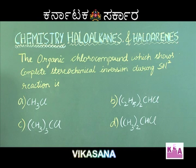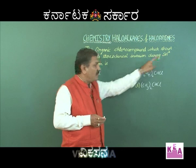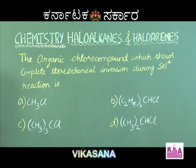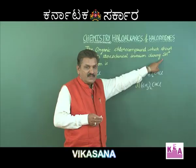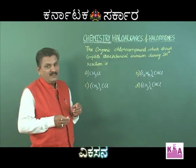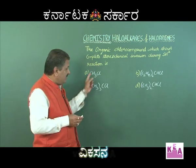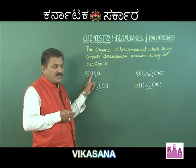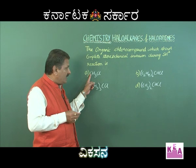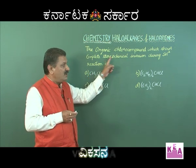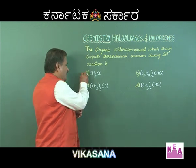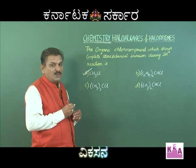This is an SN2 reaction, which involves inversion of stereochemistry. Stereochemical inversion is associated with SN2 reactions. SN2 reactions are undergone by primary alkyl halides. Amongst the given four options, the primary alkyl halide is methyl chloride (CH3Cl). Therefore, the correct option is option A, CH3Cl.